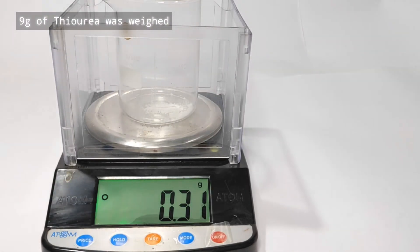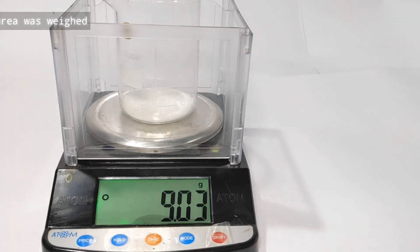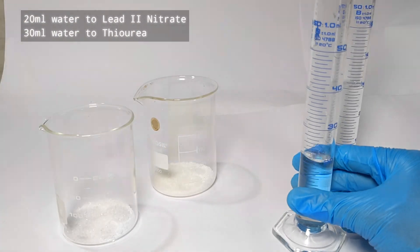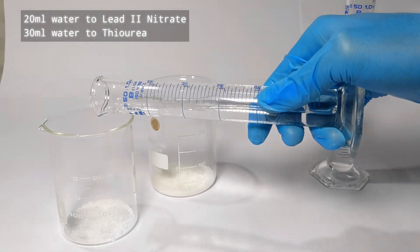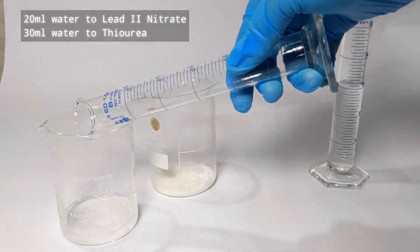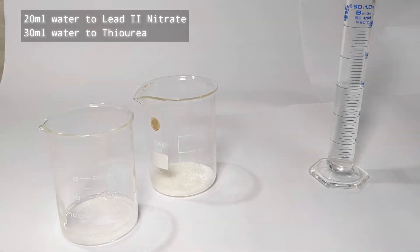Next, 9 g of thiourea was weighed out in another 250 ml beaker. Now 20 ml of distilled water was added to the lead(II) nitrate and 30 ml of distilled water to the thiourea.